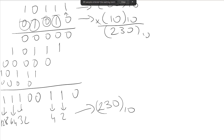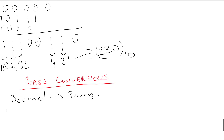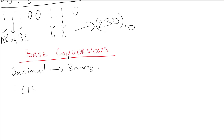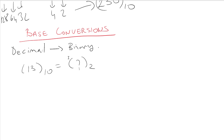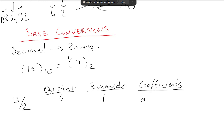Now let's do base conversion — specifically converting decimal to binary. The long way: given 13 in base 10, we set up quotient and remainder columns. We divide 13 by 2: quotient is 6, remainder is 1. This remainder is our coefficient, a0 = 1, which is the first bit.